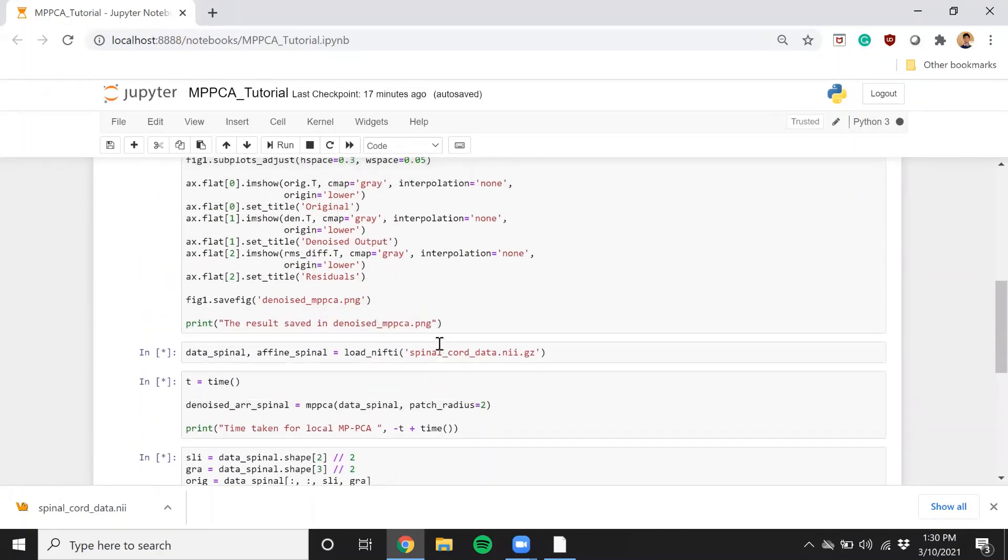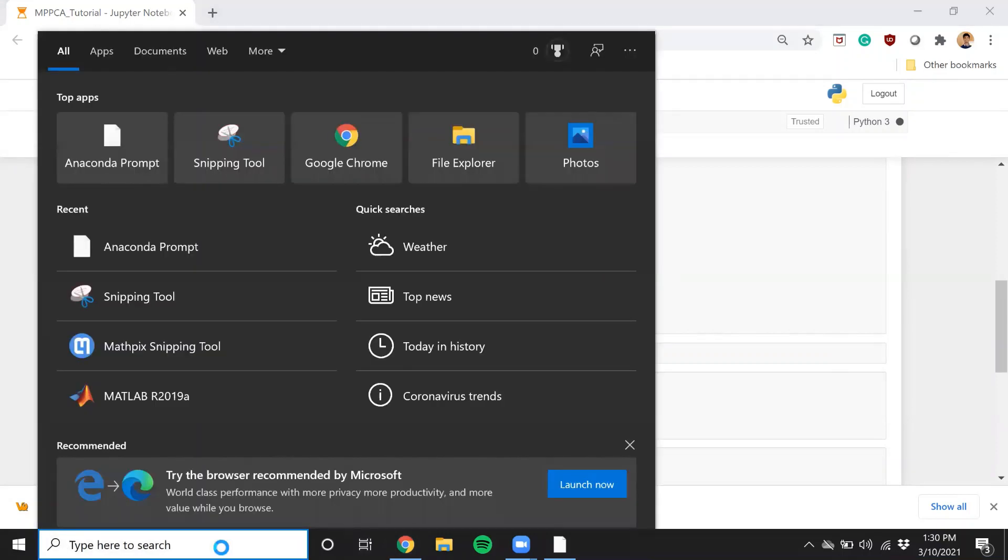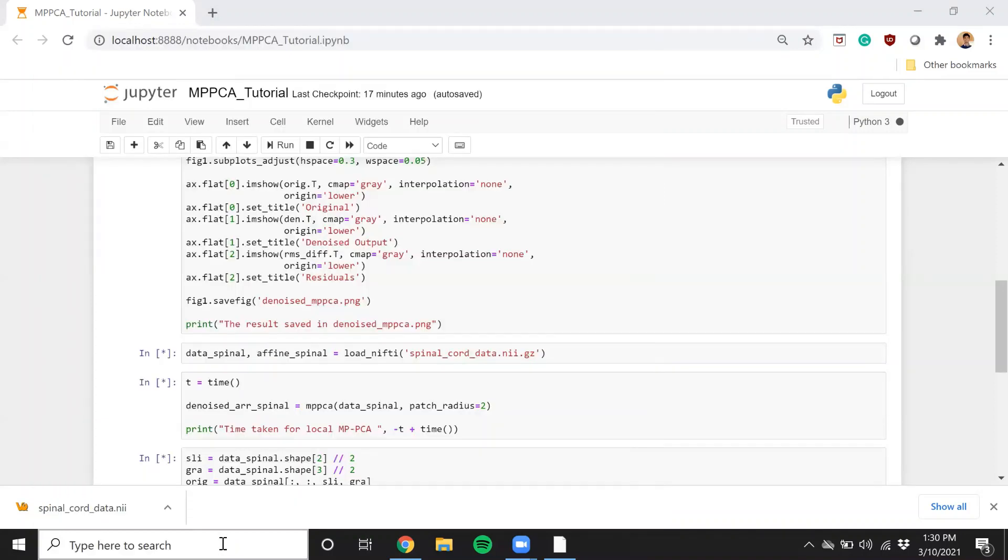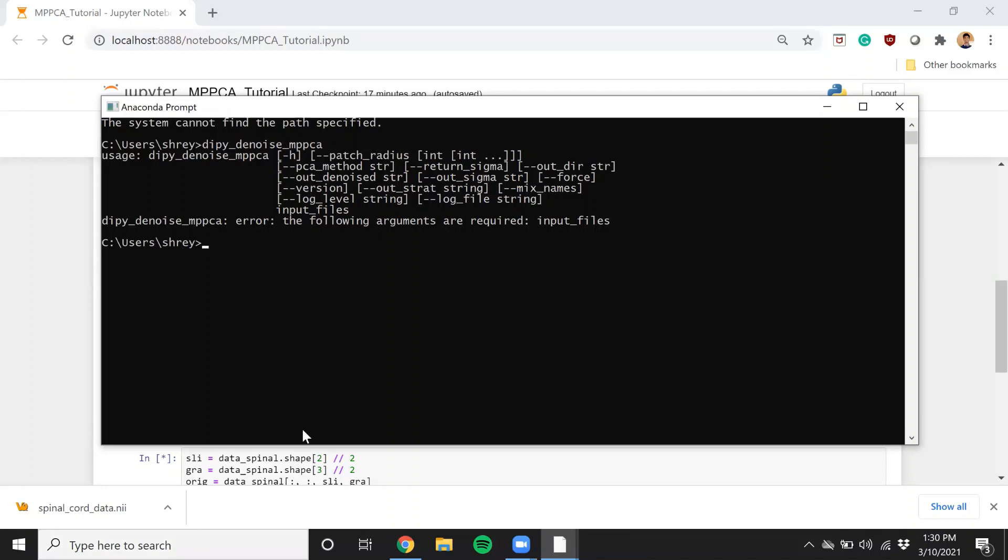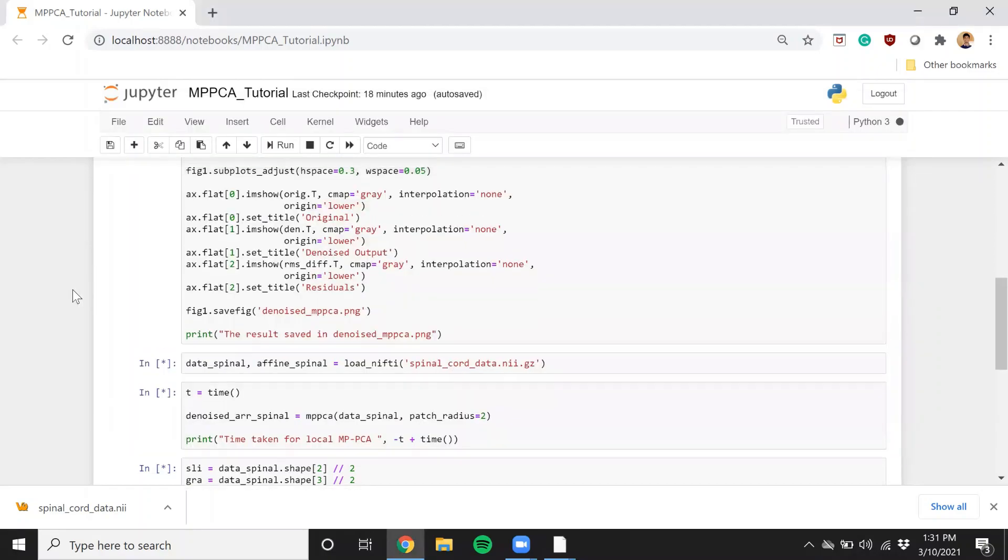You can also run this via the command line interface. All you need to do is open up a new command line. So I'm just going to say anaconda prompt, then dipy denoise MPPCA. That should be the command that you should use. As you can see, these are the options that it takes in as input. The same thing as the patch radius. So for example, if I had to use a patch radius greater than 2, I would say patch radius. And that should work for you. And the MPPCA method also returns the standard deviation of the noise. That is calculated by the MPPCA algorithm. It has a simultaneous noise estimation and standard deviation estimation. Now let's just wait for this code to finish running.